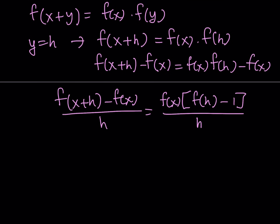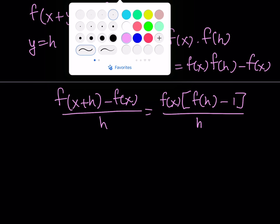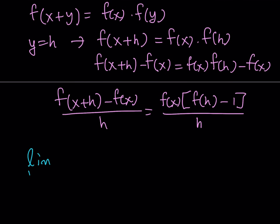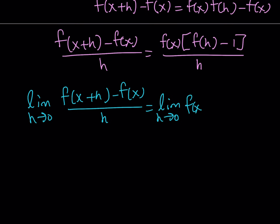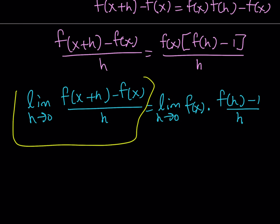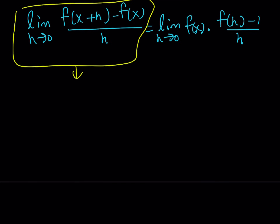Now since I have the difference quotient, I'd like to take the limit. Since f of x is differentiable, this limit exists. Taking the limit on both sides: the limit as h approaches 0 of f of x plus h minus f of x divided by h equals the limit as h approaches 0 of f of x times f of h minus 1 over h. The left-hand side is one thing you should definitely know — we get the derivative of f of x, which is f prime of x.